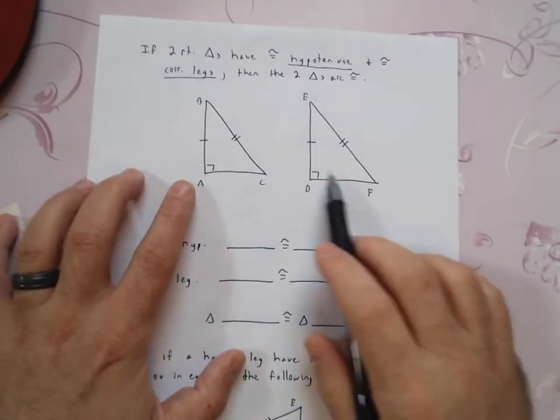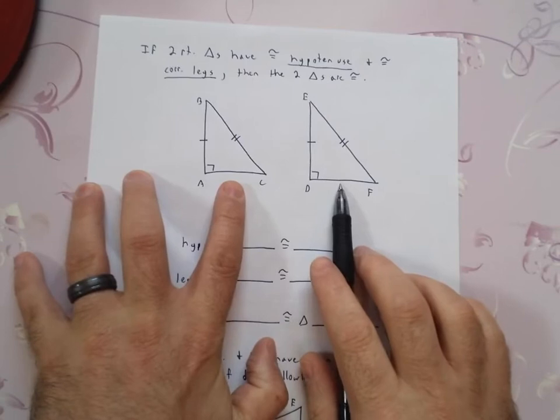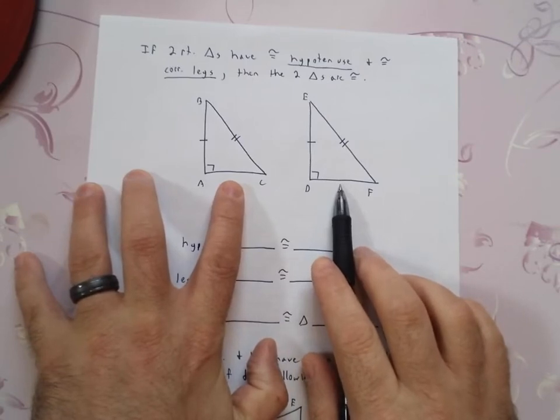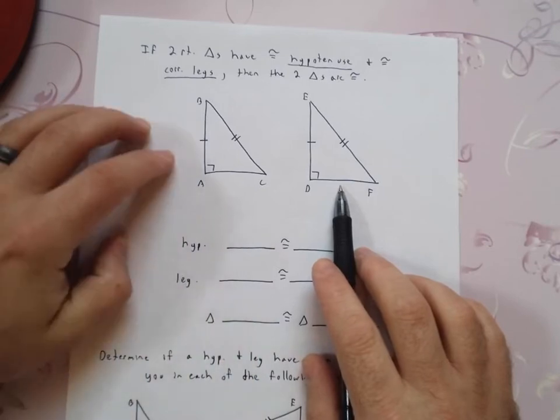So here, here's an example of it. Now, I could have made these two bottom legs congruent, but all I need is one leg, corresponding of course, and the hypotenuse. So if you look up here, the hypotenuse in my picture,